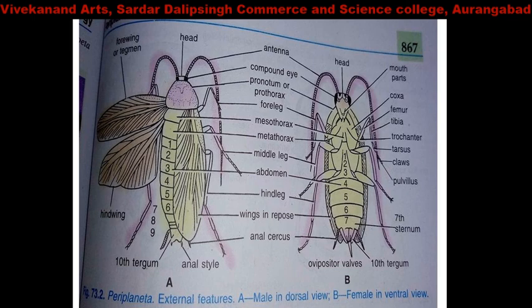To summarize: the body parts include the head with compound eyes and mouth parts. The thorax region is divided into prothorax, mesothorax, and metathorax. There are three pairs of walking legs and hence it is called hexapoda.